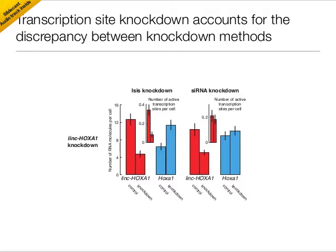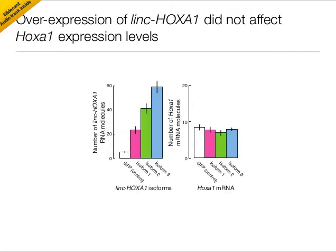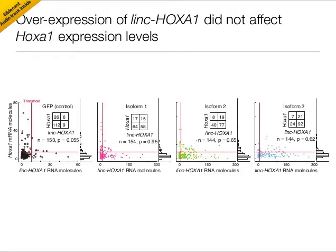We believe this provided strong evidence that lincHoxay1 acts as a transcriptional repressor in cis, meaning at or near its site of transcription. We wanted to get a bit more confirmation that lincHoxay1 is acting in cis. We reasoned that if lincHoxay1 acted in trans, or encoded a small peptide for that matter, then overexpressing it from a plasmid in the cell should have no effect on Hoxay1 expression. So we did that experiment, and that's exactly what we found. We overexpressed each of the three isoforms and saw no effect on Hoxay1, even when analyzed in detail via single-cell analysis.